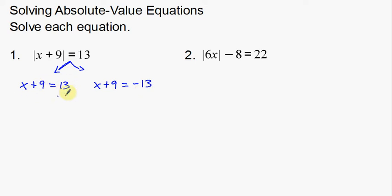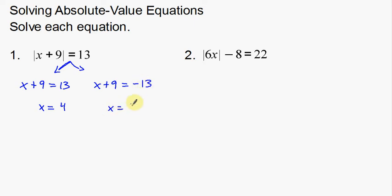Now we just solve these like any other equation. For the first one, subtract 9 from both sides: x equals 4. For the second one, subtract 9 from both sides: x equals negative 22.